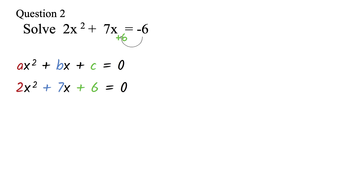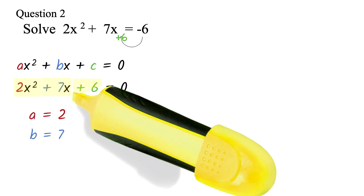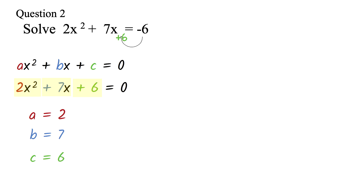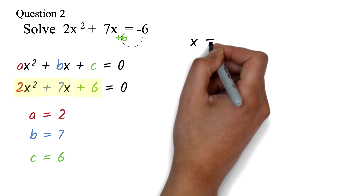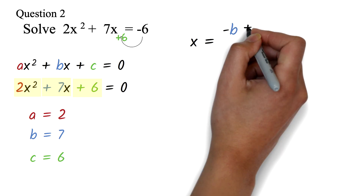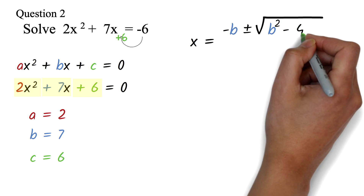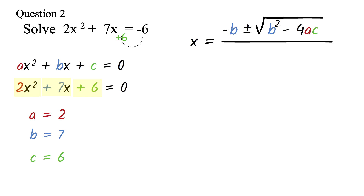In this form, the coefficient of x squared is your a value. Here, the a value is 2. The b is the coefficient of x. So here, the b is 7. Then c is the constant. Here, the c value is 6. Now we put these values in our formula. The quadratic formula is x equals minus b plus or minus square root of b squared minus 4ac, all over 2a.